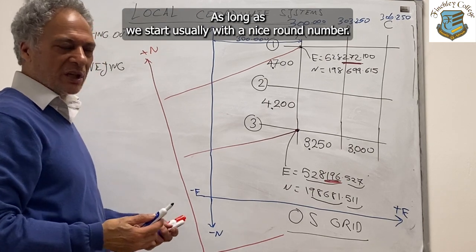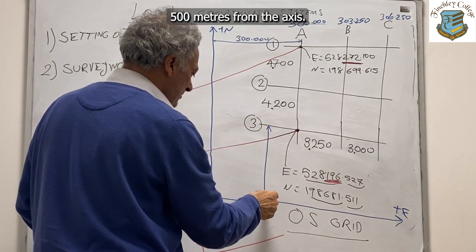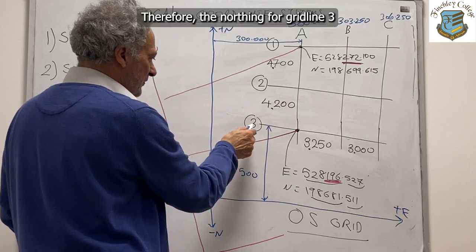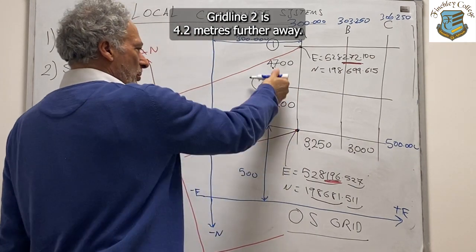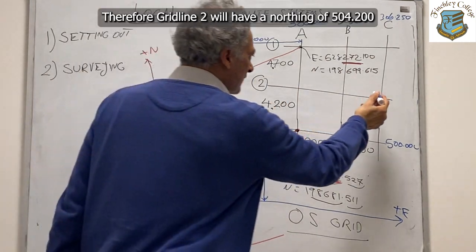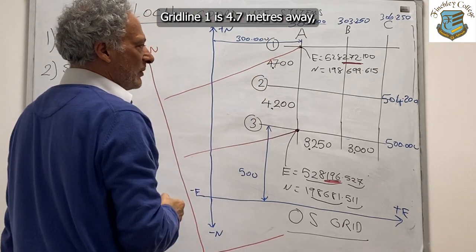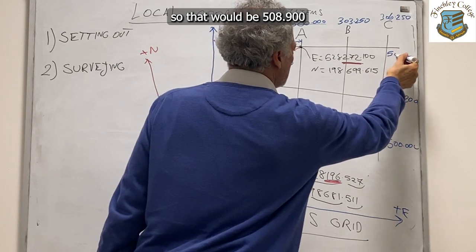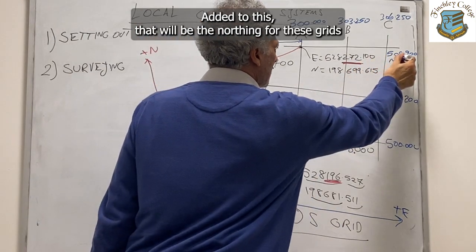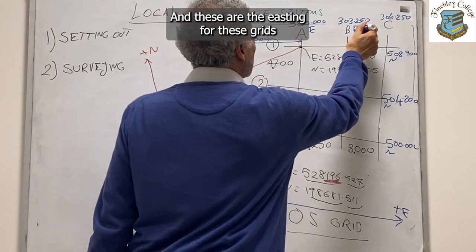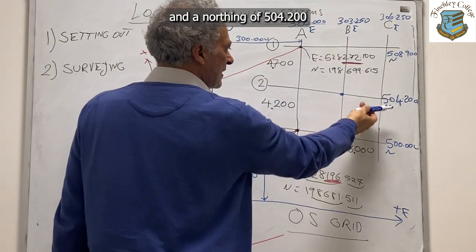If grid line A is 300 meters from this imaginary axis, then grid line B will be 3 meters 250 further away, so the easting for grid line B will be 303.250. Grid line C is a further 3 meters to the right, so grid line C will be 306.250. Then we say let these horizontal grids be 500 meters from the axis, so the northing for grid line 3 is 500 meters. Grid line 2 is 4.2 meters further, giving a northing of 504.200. Grid line 1 will be 4.7 further away, giving 508.900. So this grid intersection has an easting of 303.250 and a northing of 504.200.